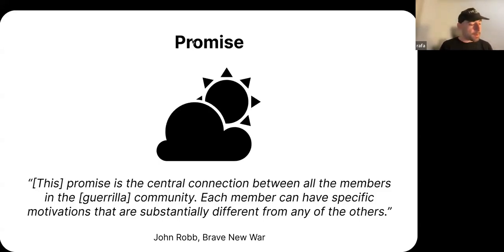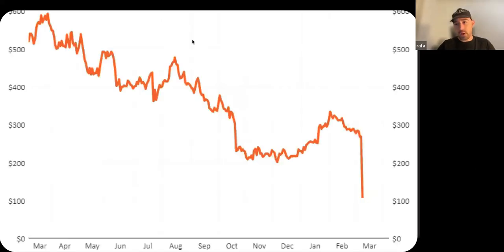As John Robb describes in Brave New War, the promise is a central connection between all the members in a guerrilla community. Each member having specific motivations may be substantially different from each other. In the case of warfare, these can be patriotism, hatred, ethnic bigotry, religion, tribal loyalty. But it doesn't matter as long as they agree on the plausible promise that they're looking to achieve. It's important to understand though that the promise is not necessarily a quantifiable objective or even rational item. It's less of a goal like build a boat or learn to fish. The promise is actually let us yearn for the sea. In the case of Jorge and Pablo, being able to think about the concept of mutual aid, because the reality was that time was of the essence and aid was required immediately given the catastrophic nature of Hurricane Maria.